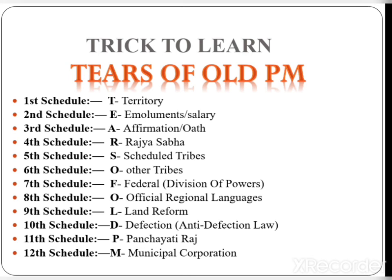Continuing the mnemonic 'Tears of Old PM': Schedule 11 — P for Panchayati Raj; Schedule 12 — M for Municipal Corporation. So the full mnemonic is: T-Territory, E-Emoluments, A-Affirmation, R-Rajya Sabha, S-Scheduled tribes, O-Other tribes, F-Federal, O-Official Regional Languages, L-Land Reforms, D-Defection, P-Panchayati Raj, M-Municipal Corporation. Tears of Old PM.